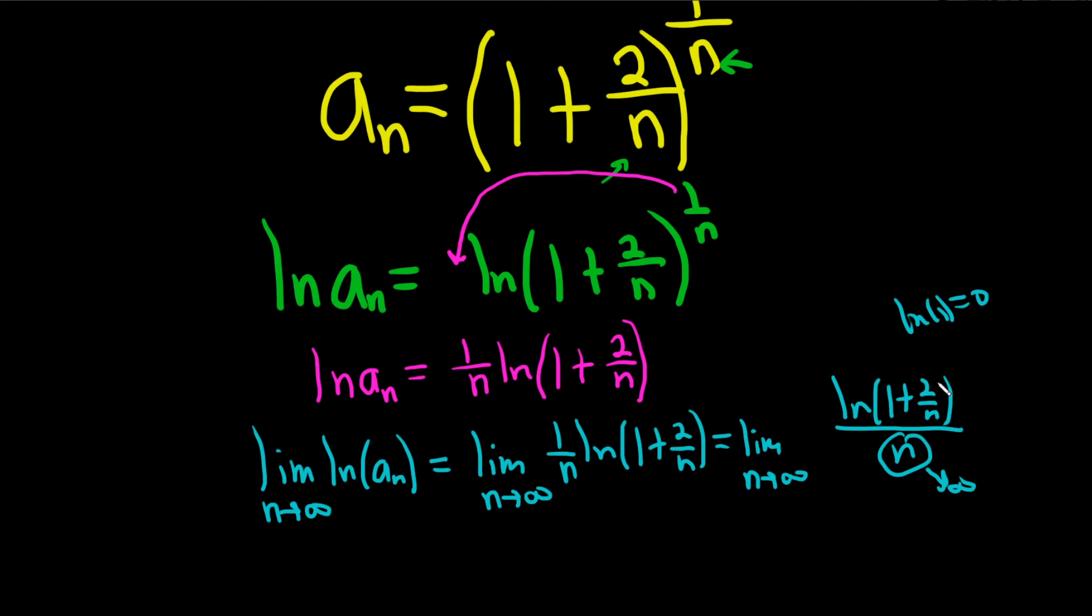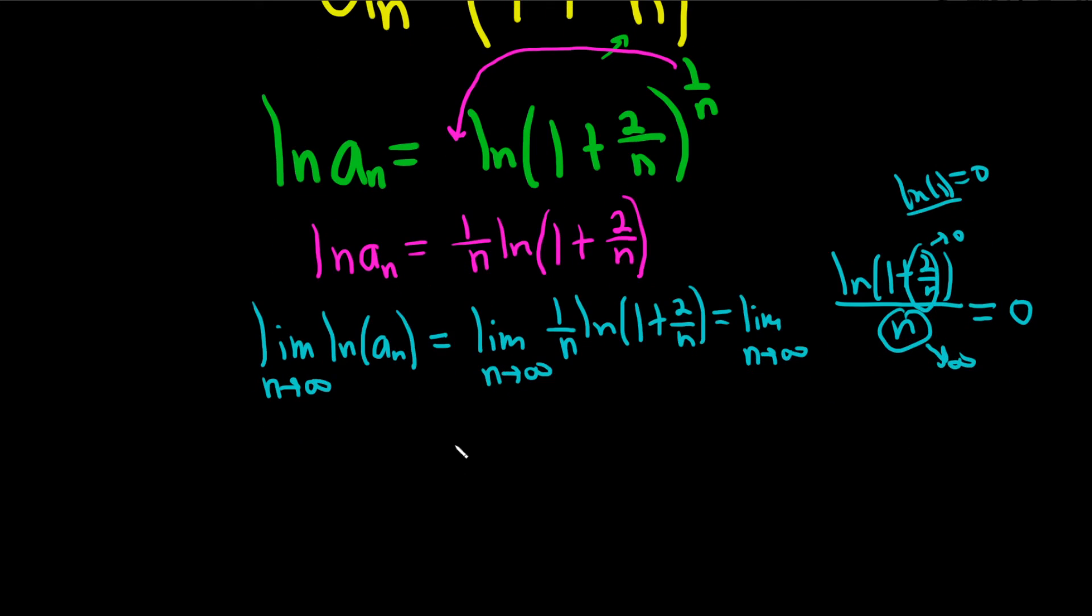And the bottom is getting big, right? It's approaching infinity. This piece here is approaching 0, by the way. That's why we get ln of 1, which is 0. So the bottom is getting big. The top is approaching 0, so this is just 0. So we've shown that this is equal to 0. So we've shown that the limit, or rather that ln of a sub n approaches 0 as n approaches infinity.